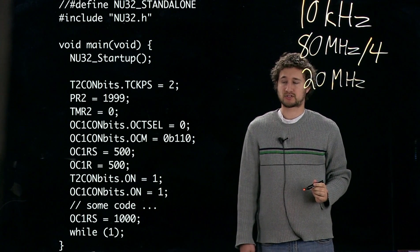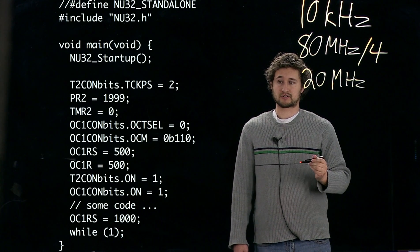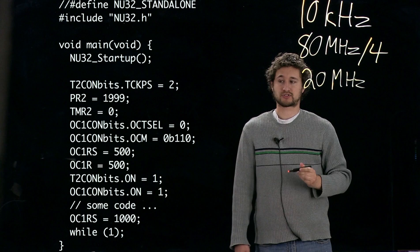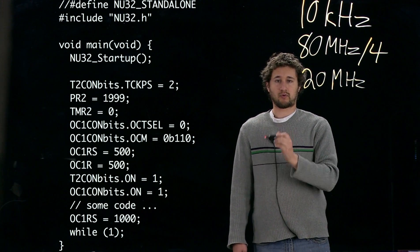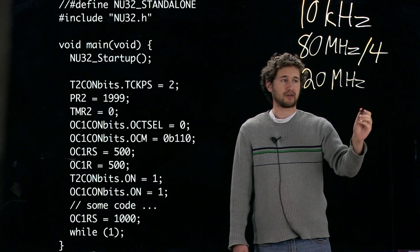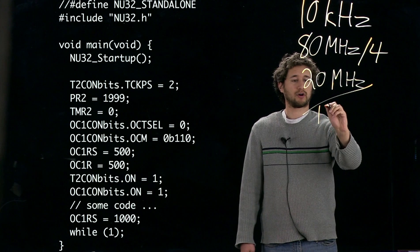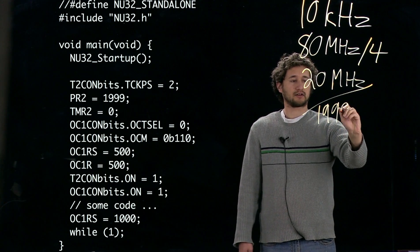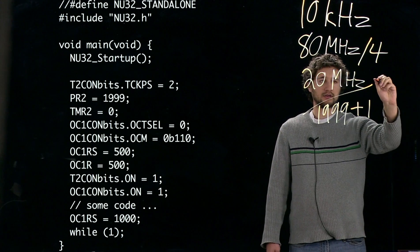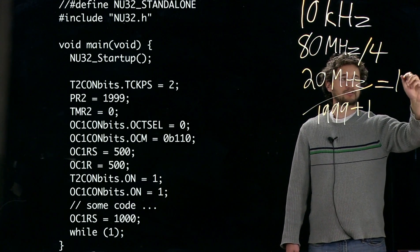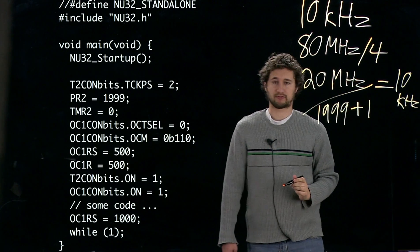The next thing we want to set is the PR2 register. The PR2 register is when the timer counts up to PR2, it then resets. So we set PR2 to 1999. That means we're going to be dividing our clock frequency by 1999 plus 1, and this will equal our 10 kilohertz PWM frequency.